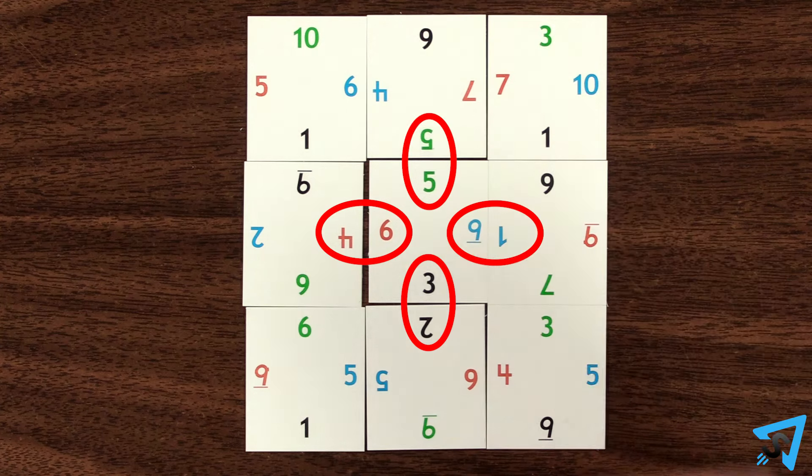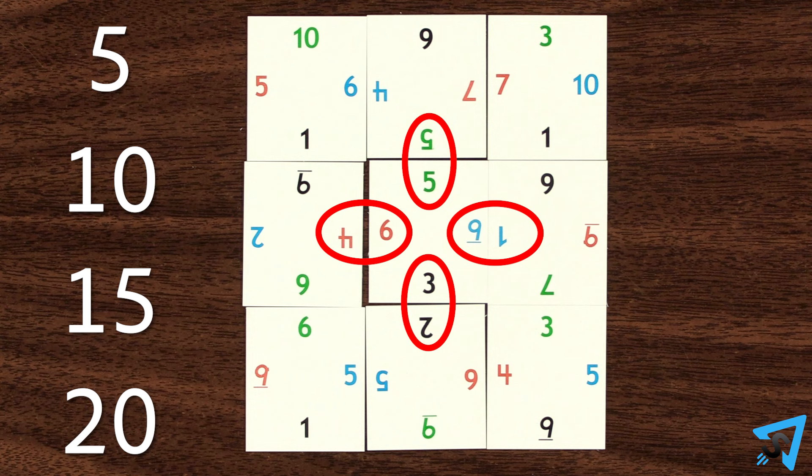All colors on all the sides of a corner must match, and all sides must either equal the sum of 5, 10, 15, or 20, or be a matching pair.